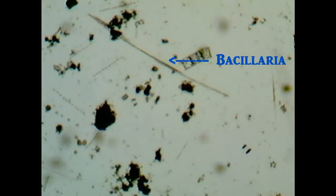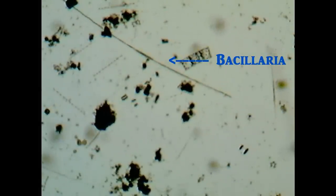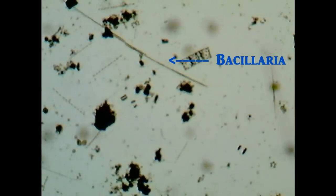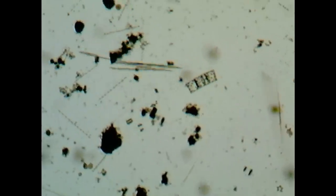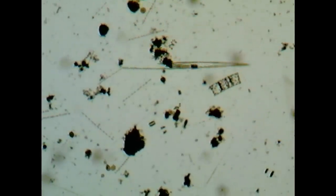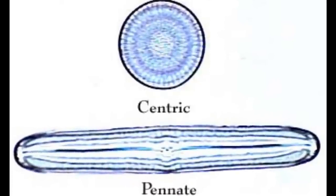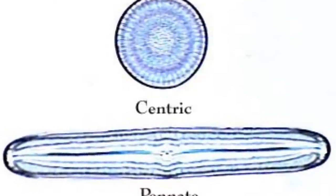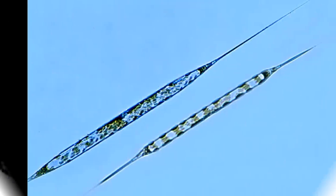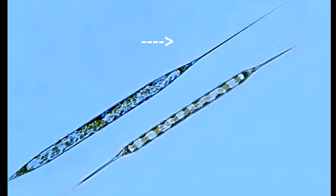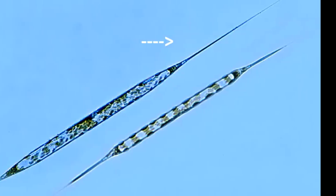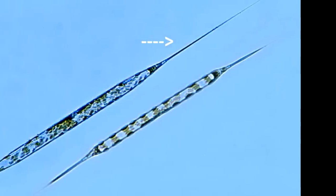For example, Bacillaria are pennate plankton, which are usually long and thin, whereas Coscinodiscus is centric plankton, which are usually characterized by their bodies being completely symmetrical. Another way to tell the difference between plankton is by things that stand out — for example, Rhizosolenia can have extended points coming off their bodies, whereas Pleurosigma will not.